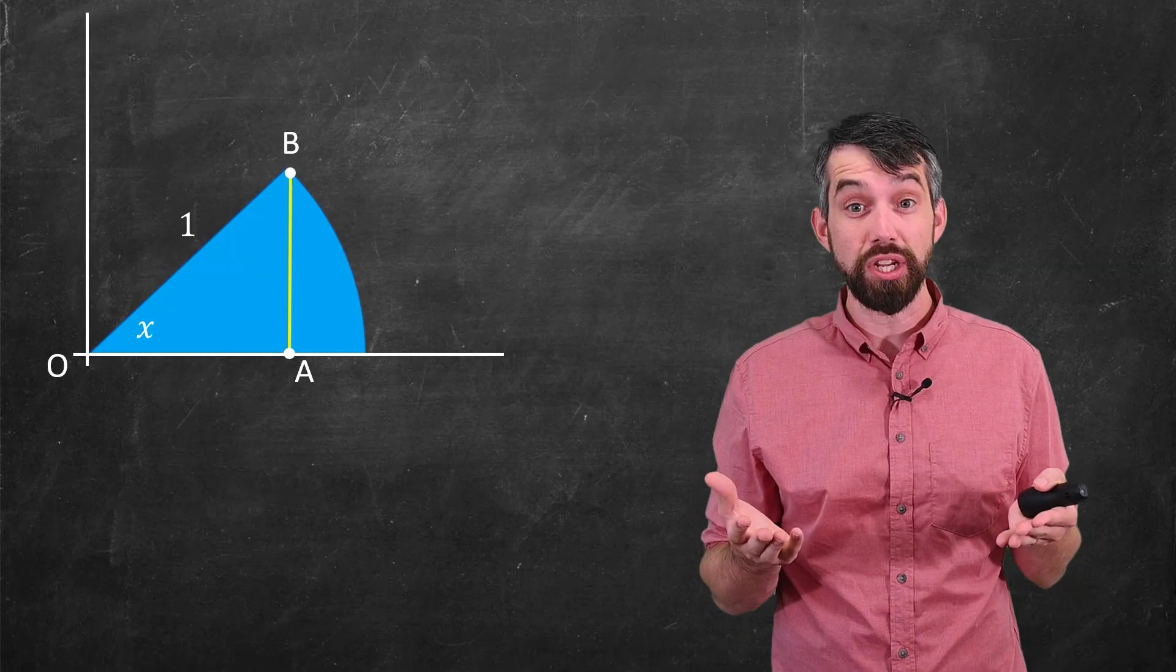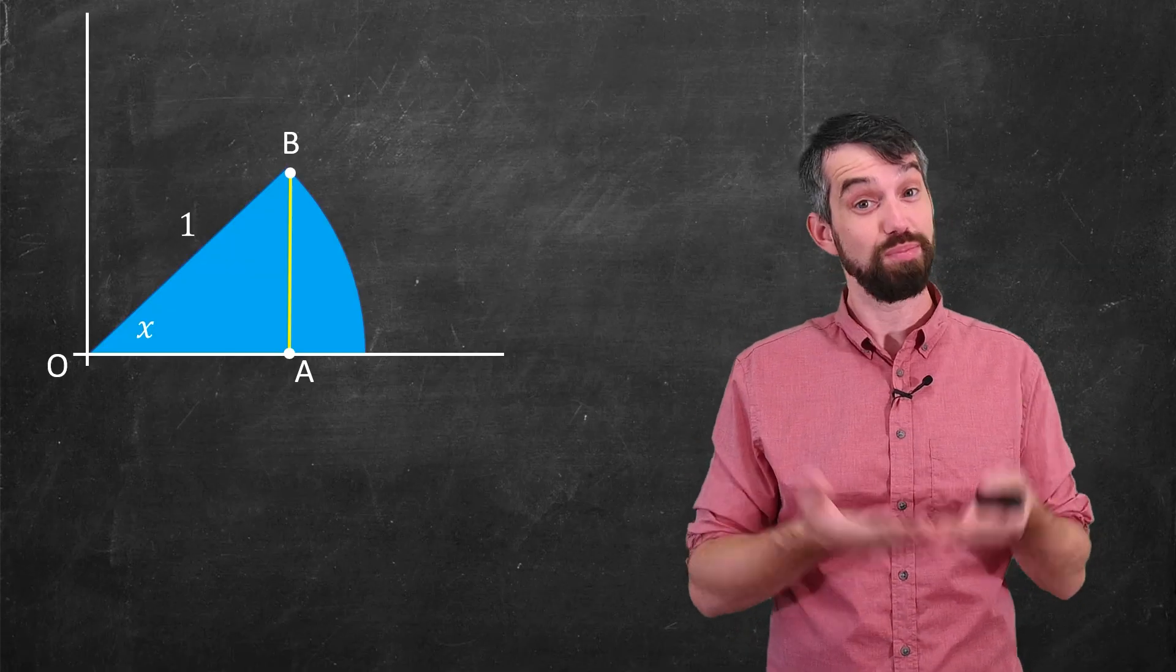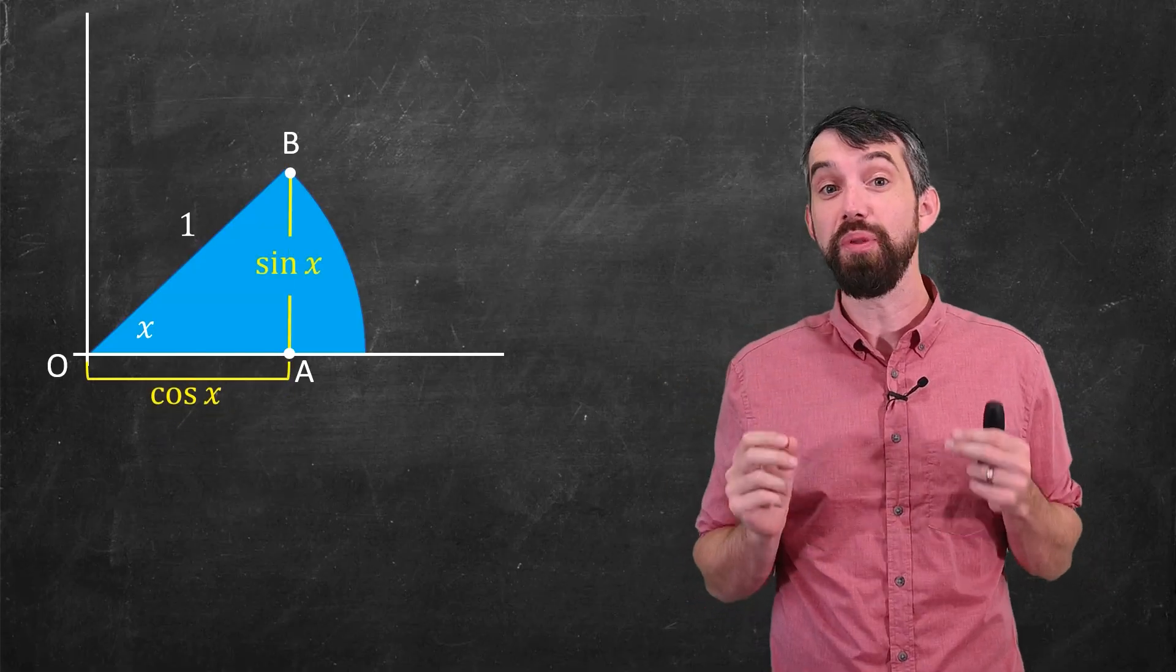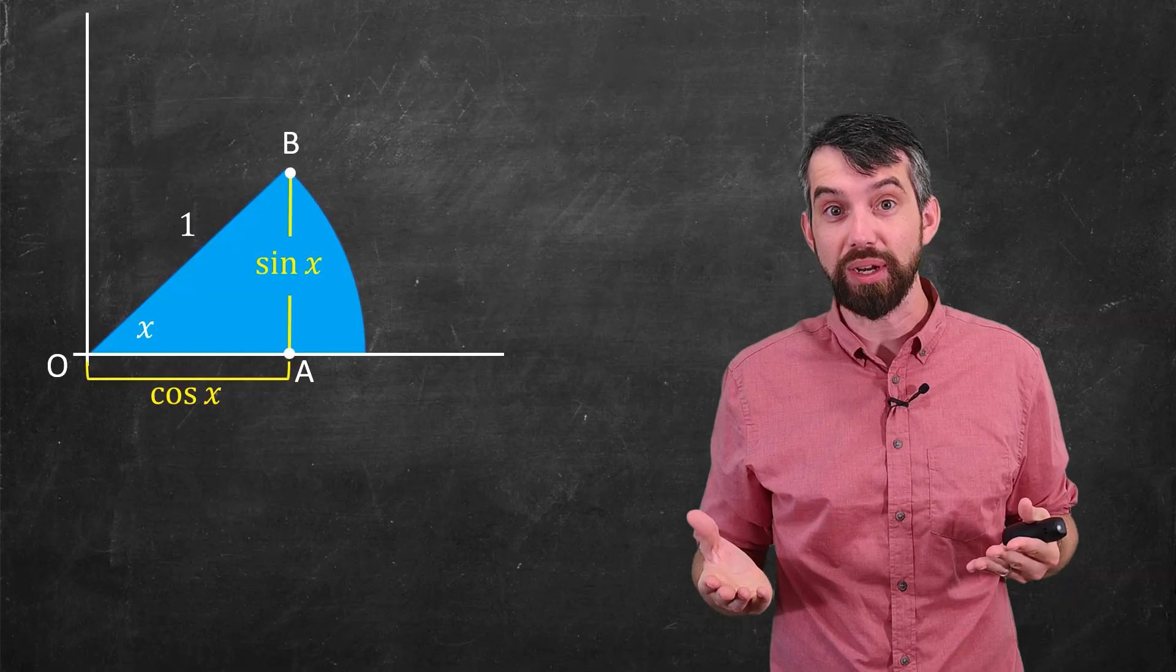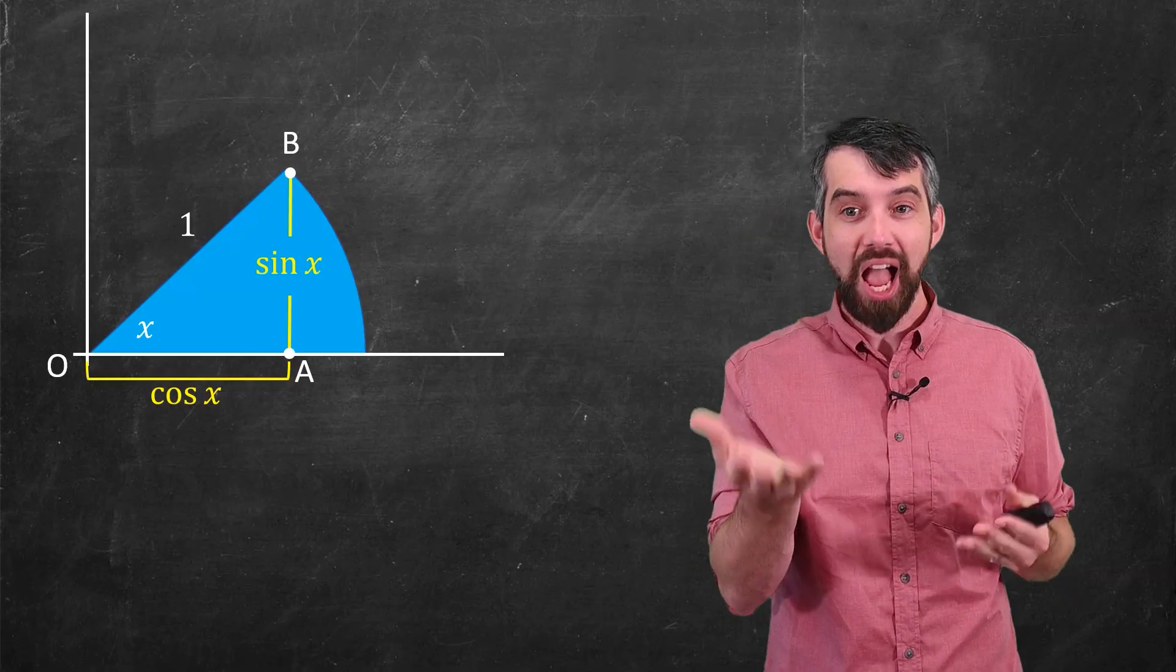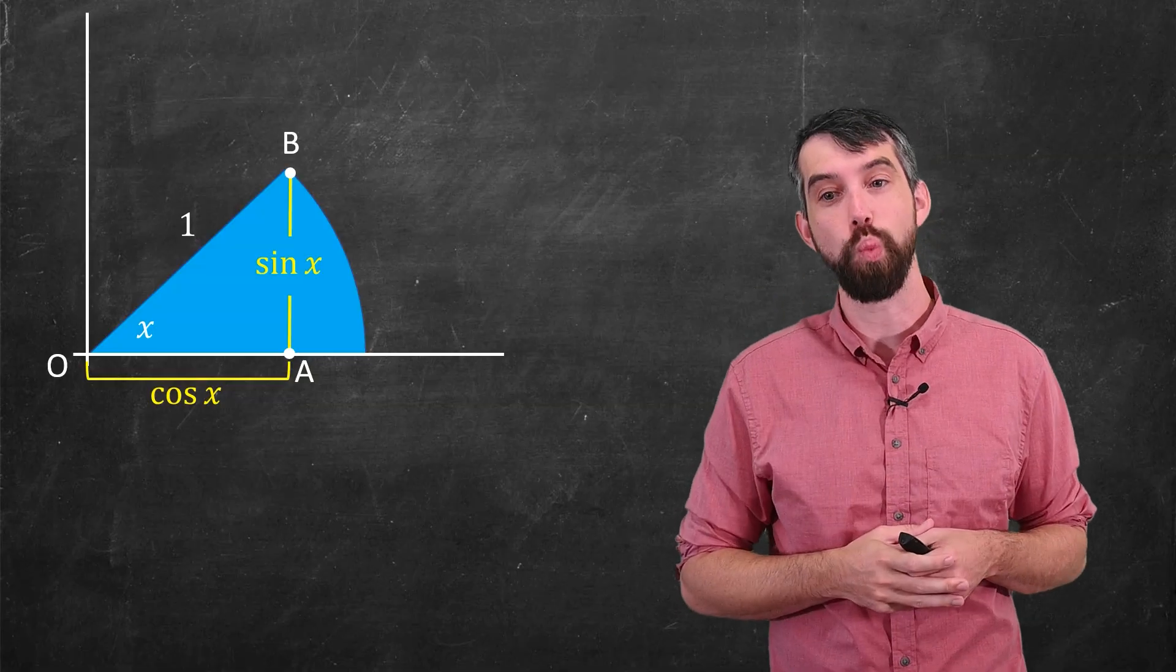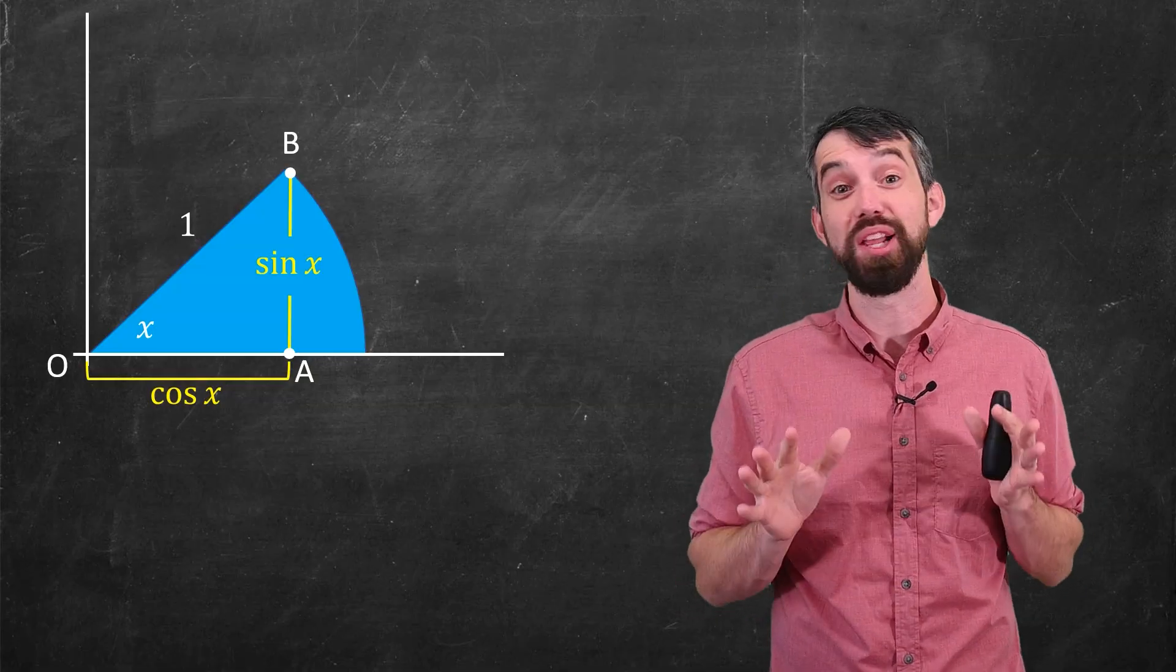I can use a little bit of trigonometry. What is the definition of cosine of x? It's the adjacent over the hypotenuse, which is just 1, and so the adjacent is just cos of x. Similarly, the opposite is sine of x, because sine of x is the opposite over the hypotenuse, which in this case is 1. So these are just the definition of sine and cosine.